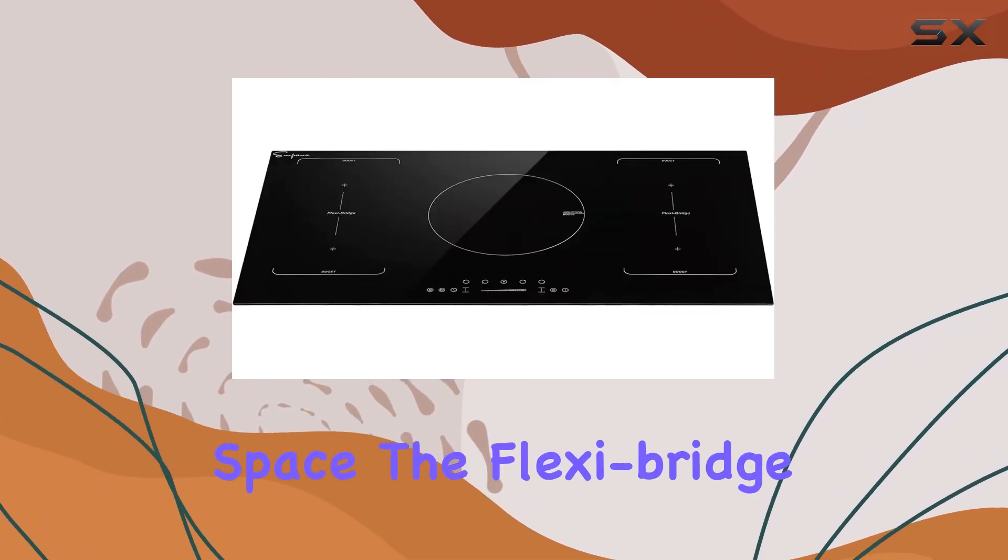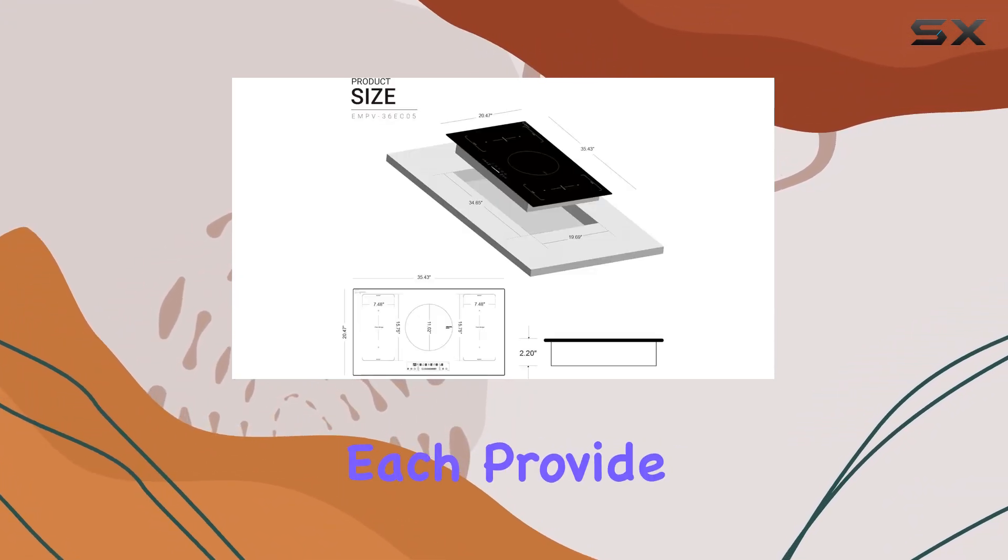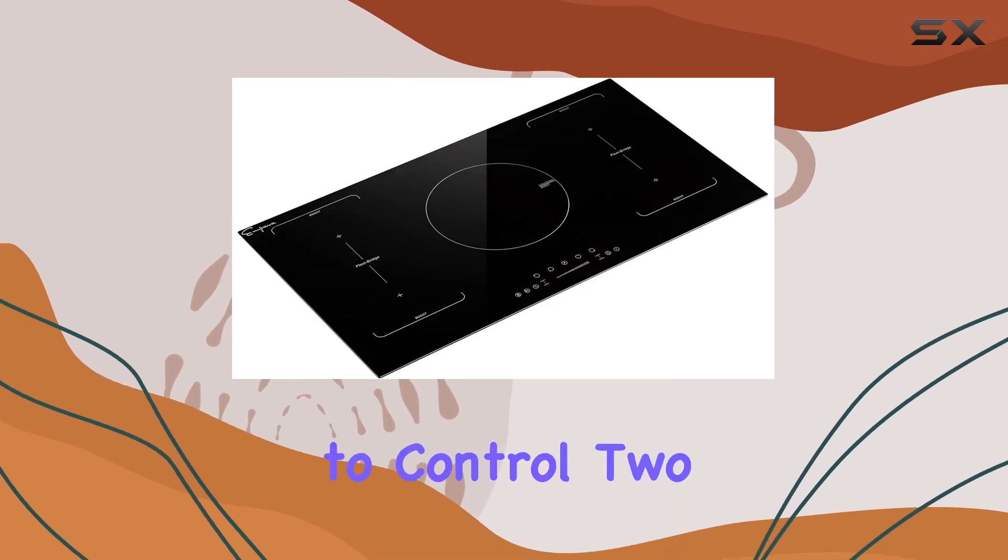The flexi bridge burners, measuring 15.75 inches by 7.48 inches each, provide the flexibility to control two heating elements simultaneously, perfect for evenly heating large cookware or griddles.